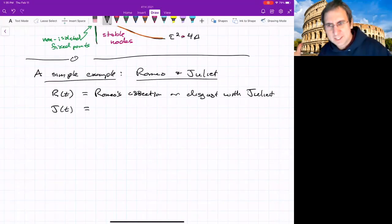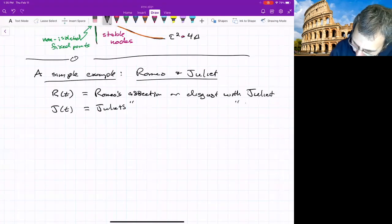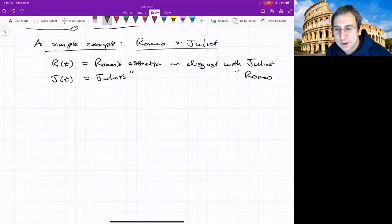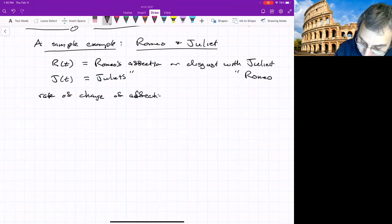And so it could be positive if he's affectionate or disgust if it's negative. And then on the other hand, there's Juliet's affection or disgust with Romeo. So their affections change in time, right? They're impetuous youth from Verona. So the rate of change of their affection can be given by a differential equation.